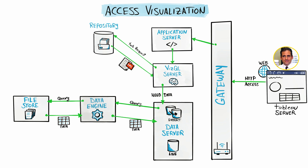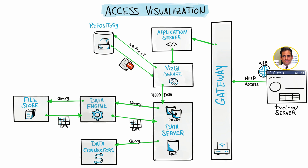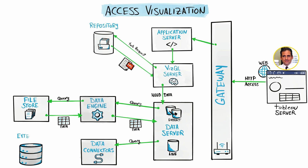For the part of the data that lives outside of Tableau Server, the data server acts as a proxy. It uses data connectors to connect to the external databases. Once the connection is established, it sends a query that matches the language the database speaks, and then the database returns the needed data as a raw table.